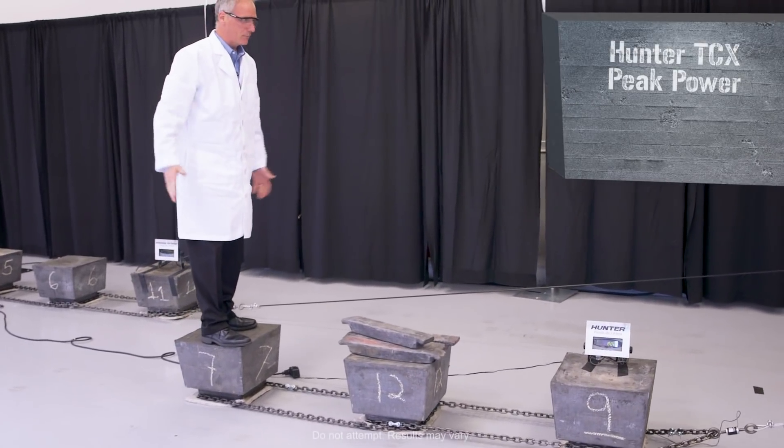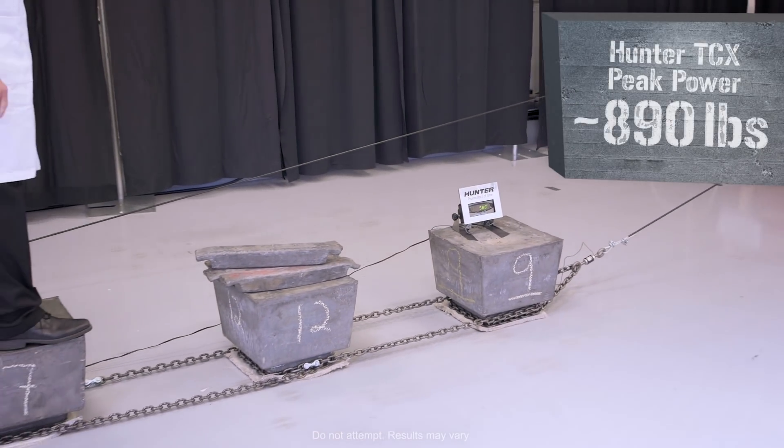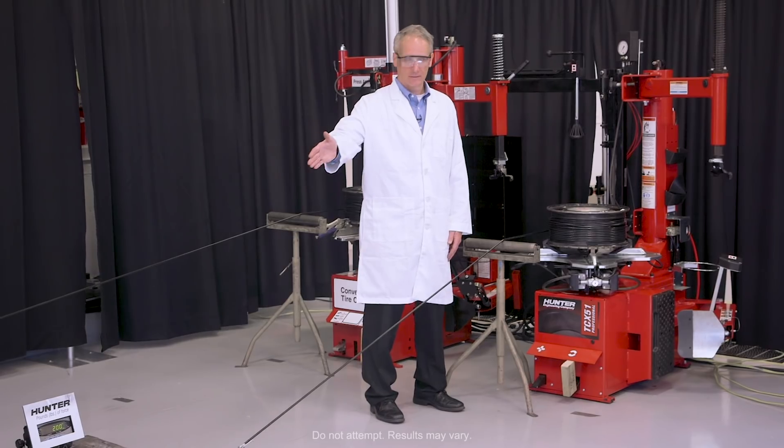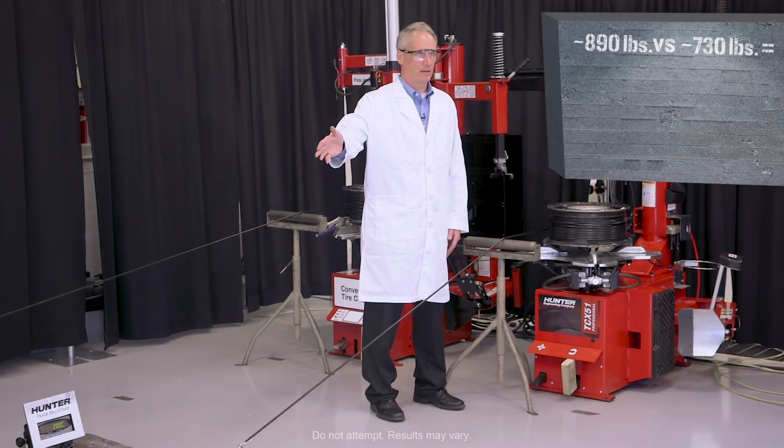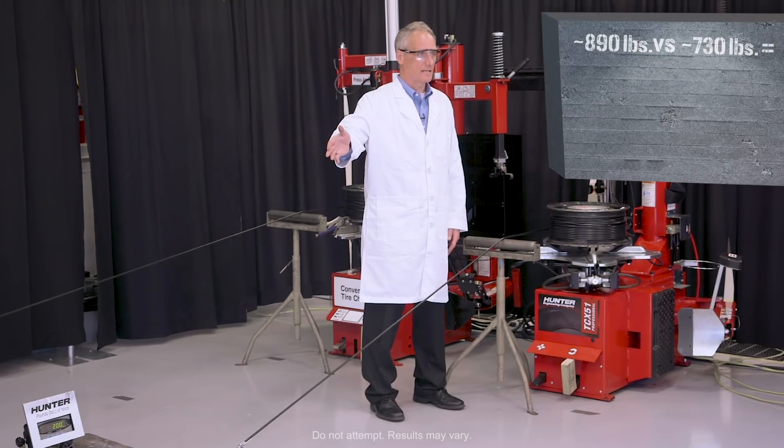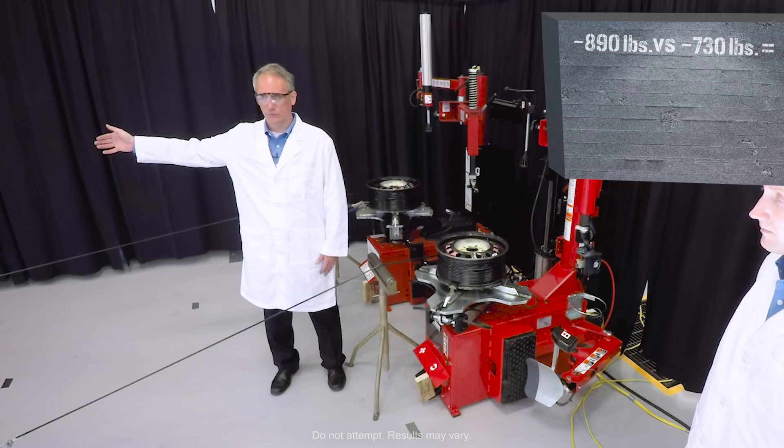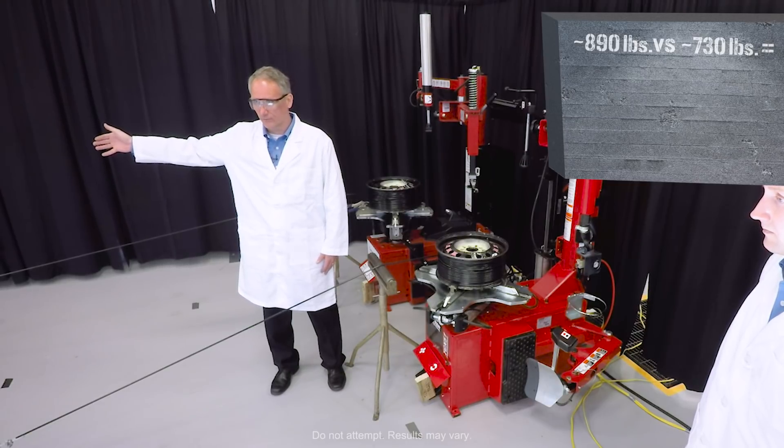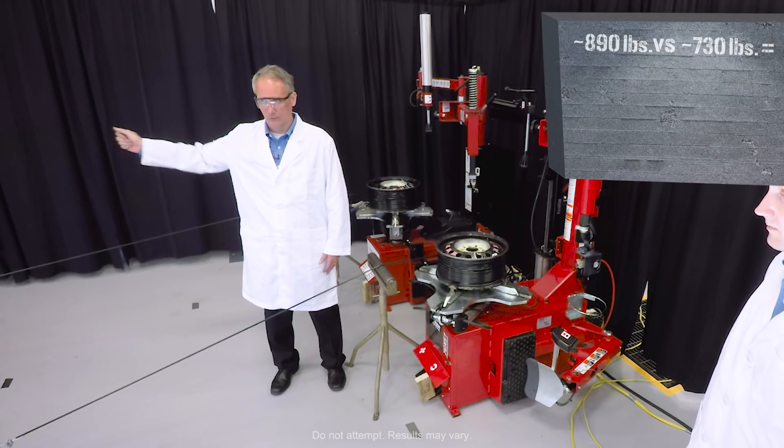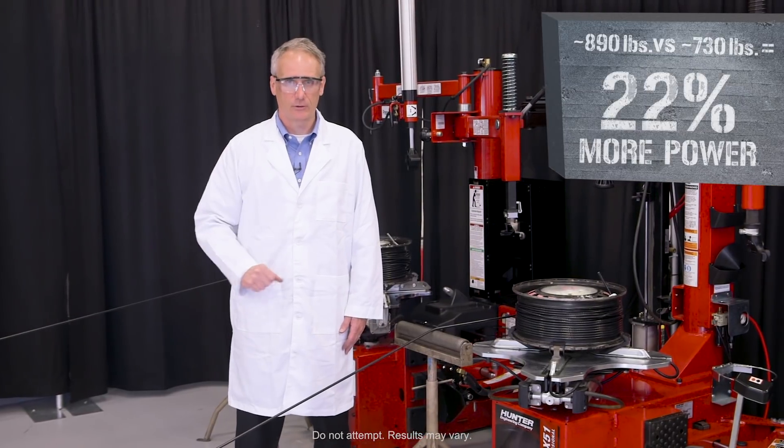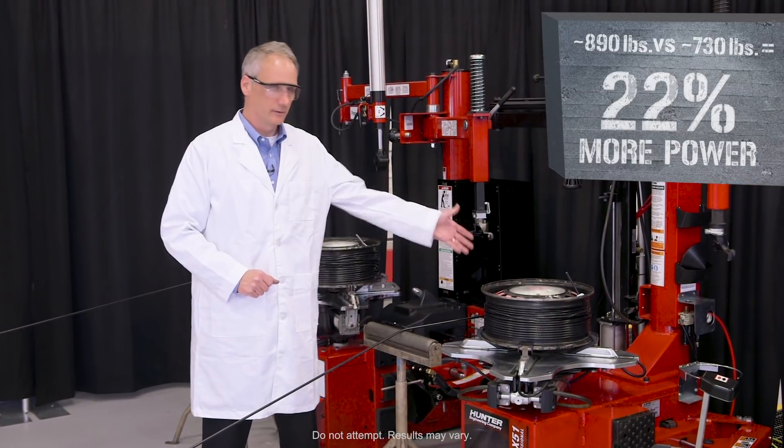I can't get it to stop. Oh, there we are. So in conclusion on the power test, the TCX saw a peak power of somewhere in the 890 pound range. We saw a very momentary peak just a bit over 700, 730 pounds for the conventional tabletop. So 890 to 730, clear advantage TCX.